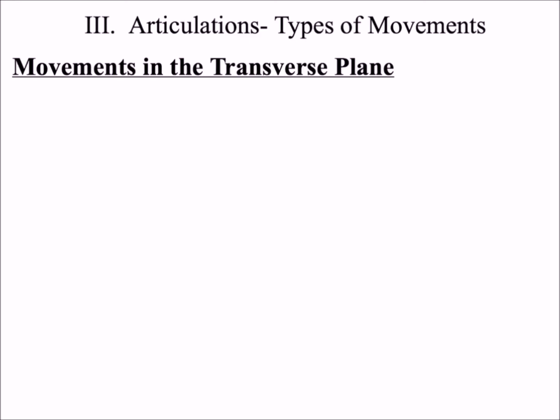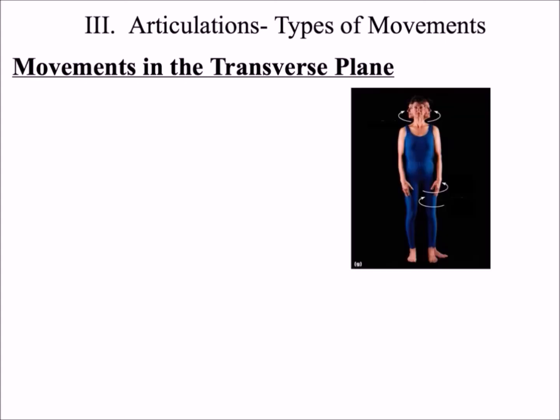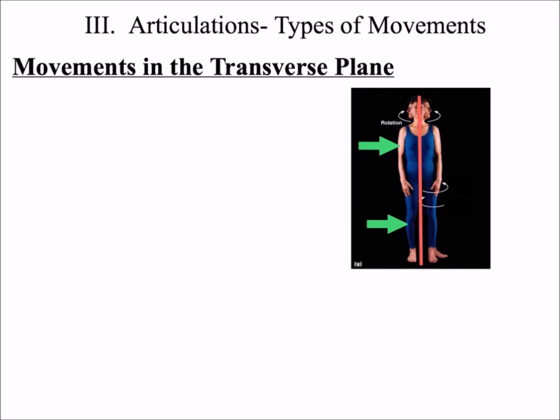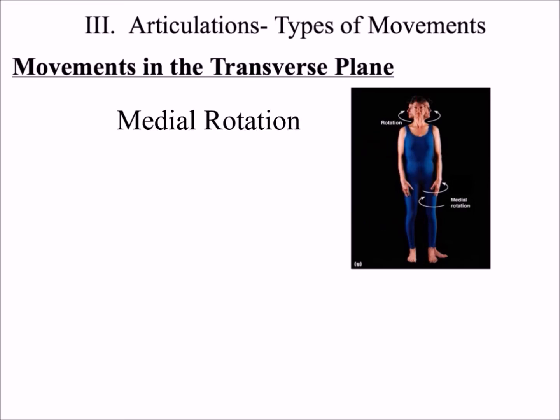Movements parallel to the transverse plane are called rotations. Rotation that occurs within the axial skeleton is simply called rotation. Any type of rotation that occurs in the appendage is either medial or lateral rotation. In medial rotation, the appendage is rotated toward the midline of the body, whereas in lateral rotation, the appendage is rotated away from the midline of the body.